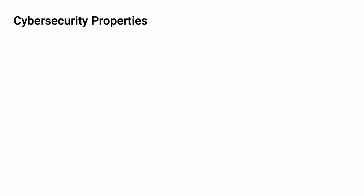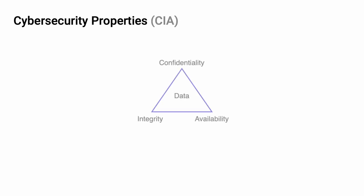Now let's take a look at cybersecurity properties — the characteristics of assets that we wish to ensure are maintained. We can't talk about cybersecurity properties without bringing up the CIA triad. This triad of properties — confidentiality, integrity, and availability — has existed for a very long time. Although the CIA tends to be held up as the gold standard, it's not and never has been universally accepted as the only basis for cybersecurity properties.